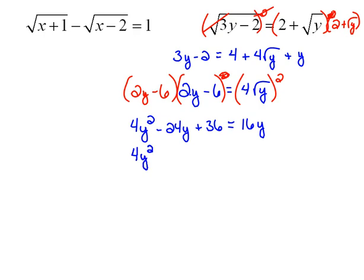So let's move our 16 over to this side. So we have 4y squared, and this would be minus 40y, plus 36, equals 0. And now do you notice that they all have a 4 in common? We could divide that out. So that would be y squared, minus 10y, plus 9, equals 0. Now that will factor.